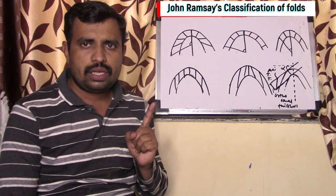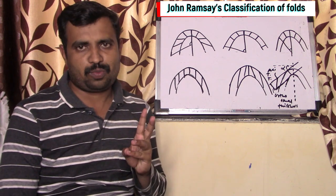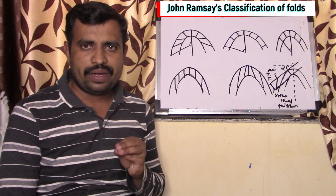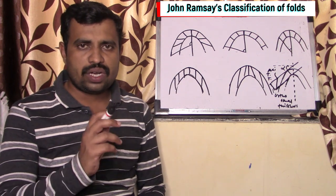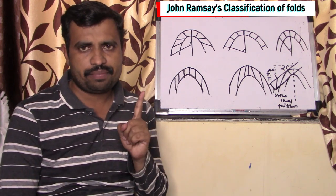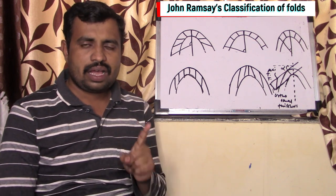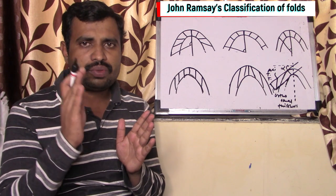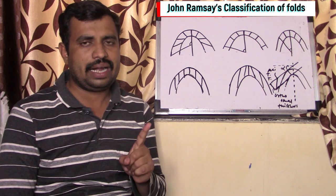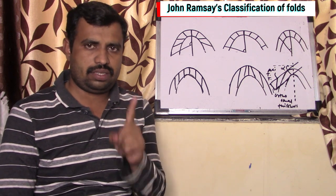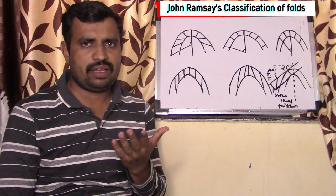In this classification we have to understand what a dip isogon is — that is the first point. The second point is that in this classification there are three types of folds: class 1, class 2, and class 3. Class 1 is again divided into three types: class 1A, class 1B, and class 1C. I am going to discuss this in a very simple way.